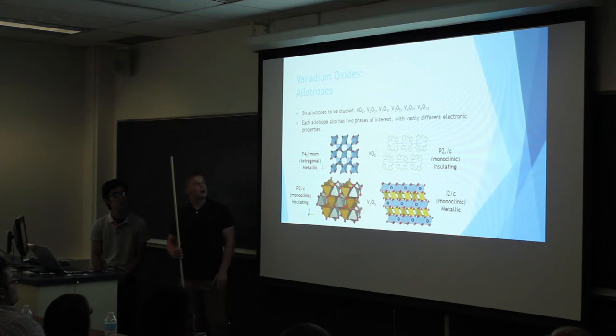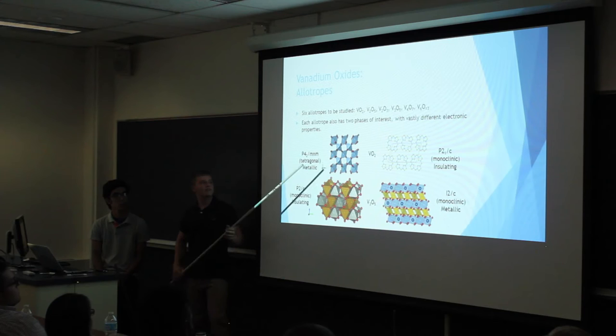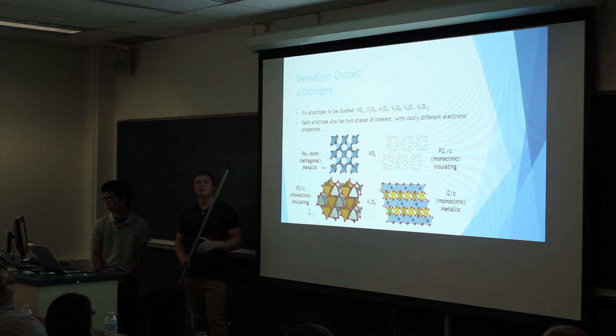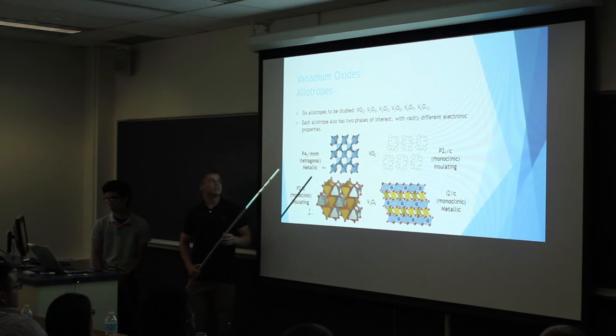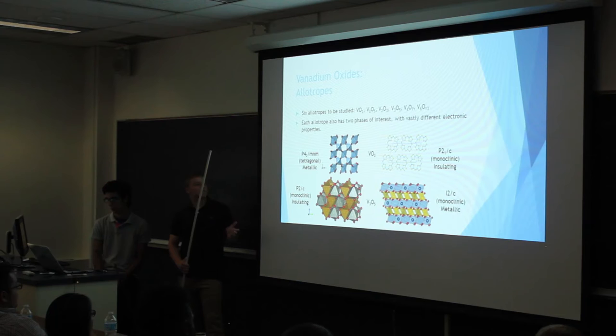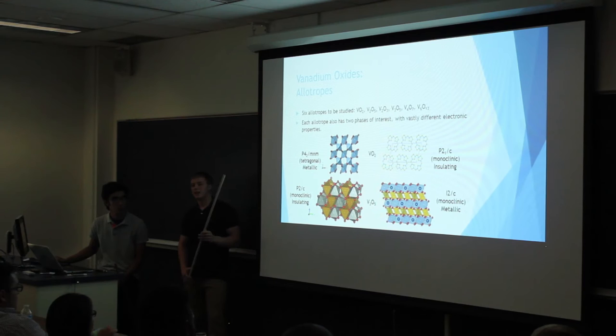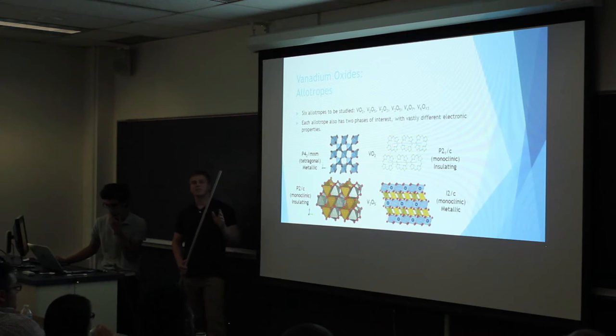I have examples of the structures of a couple of these allotropes. Here I have vanadium dioxide in the metallic phase and insulating phase, and also V3O5. You can see that depending on the allotrope, the structures between the two phases may differ greatly — such as with vanadium dioxide, it changes from tetragonal to monoclinic, which is a big change. But with V3O5, they're both monoclinic; there's just a slight change in the lattice parameters. What we care about is that the electronic and optical properties between those two phases are drastically different.